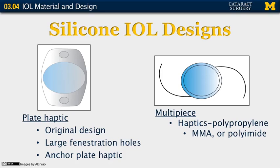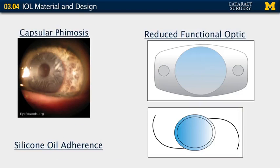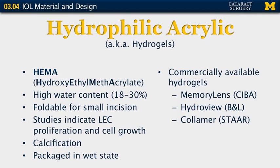The multi-piece silicone lens has haptics made of polypropylene, and again is placed in the capsular bag. Here on the left is an example of phimosis of the capsule. You will see that what looks initially to be the pupil is actually the internal edge of the anterior capsule, where it has constricted and opacified around the lens implant. In addition, silicone lenses do tend to have a reduced functional optic, and therefore may not be the best choice in patients with large pupils.